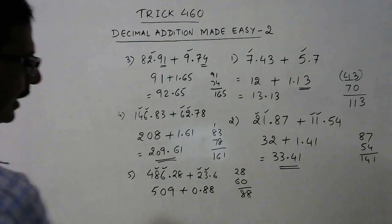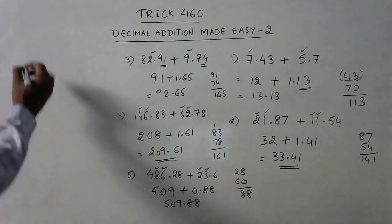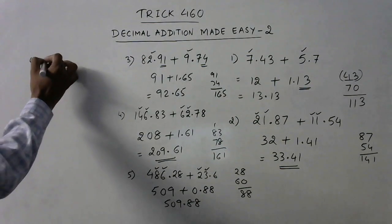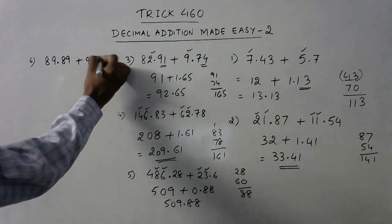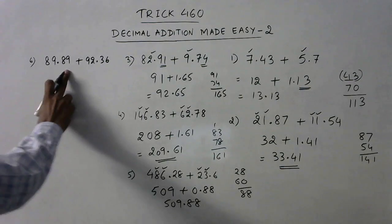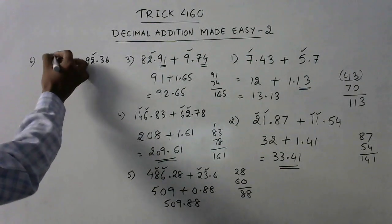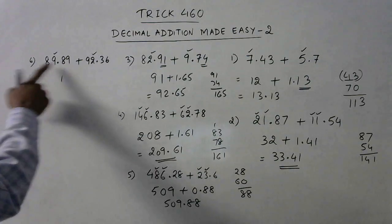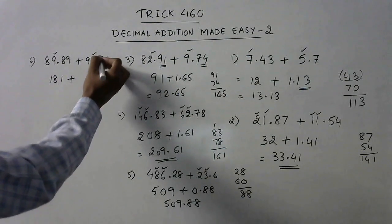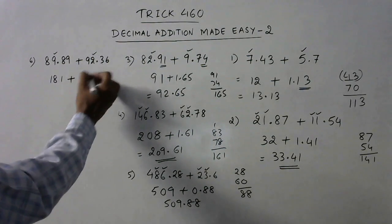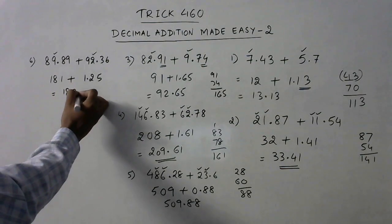Some more examples: say we have 89.89 and 92.36. Again, digits are same, so we do not need to equate it. Just add: 2 plus 9 is 11, one carry, 9 plus 8 is 17 plus 1 is 18, so 181. And now 6 plus 9 is 15, five, one carry, and 8 plus 3 is 11 plus 1 is 12. So we need to put a decimal here, two digits from the right side, so answer is 182.25.